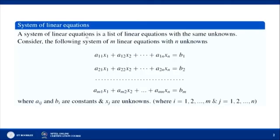A system of linear equations is a set of linear equations with the same unknowns. Consider the following system of m linear equations with n unknowns. We are having m equations that are linear, having the same set of variables x_1 to x_n. So this system has n unknowns with m equations.